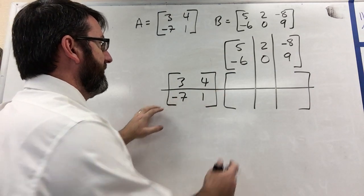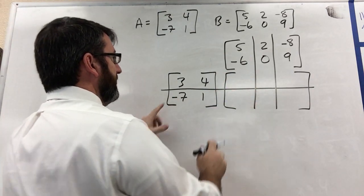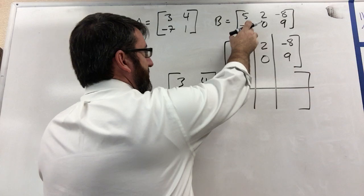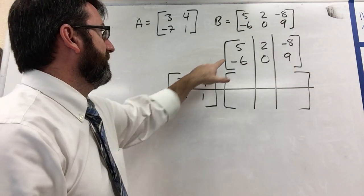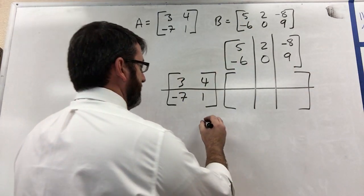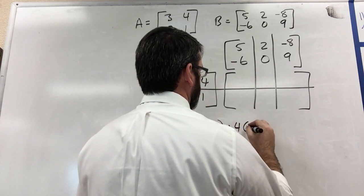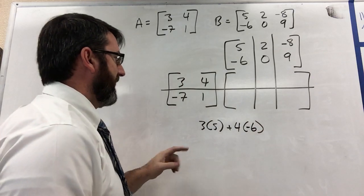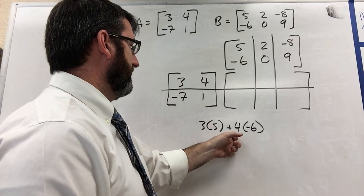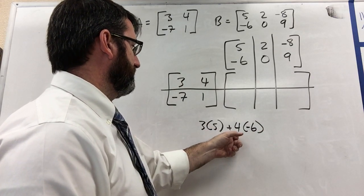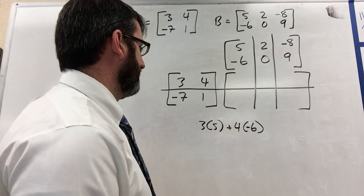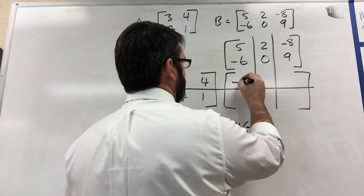And now we can see that in order to fill in this entry, we need to multiply this row times this column. So that's going to be 3 times 5 plus 4 times negative 6. And so that's 15 plus negative 24, so that's going to be negative 9.